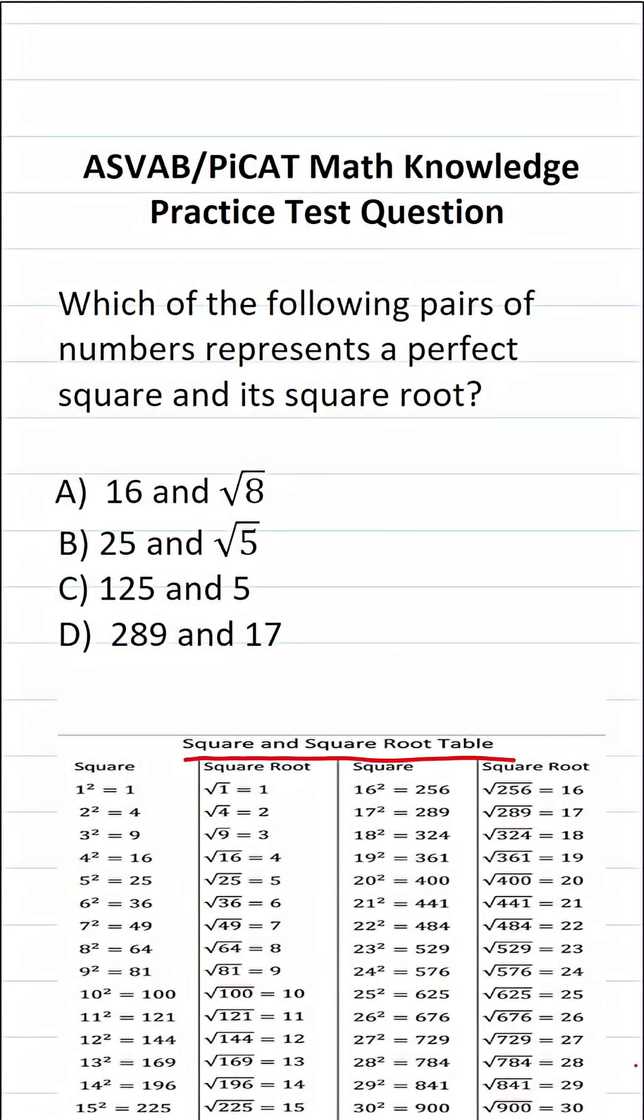Let's take a look at these one by one. Now this first number is going to be our perfect square and this second number is going to be the square root of that perfect square.